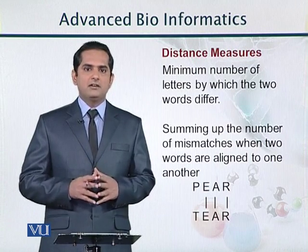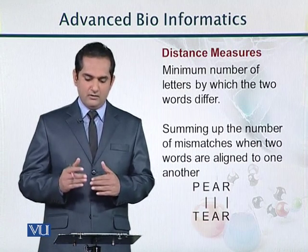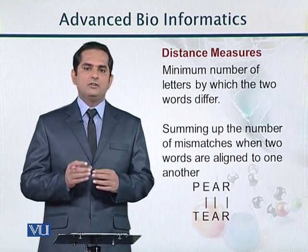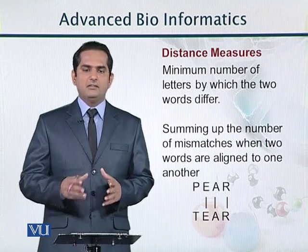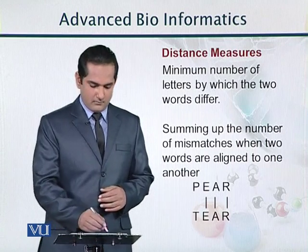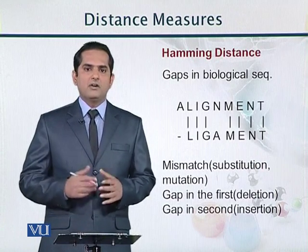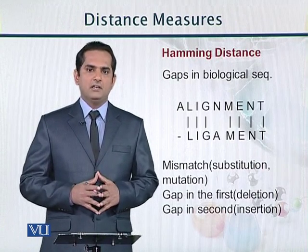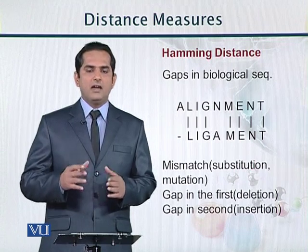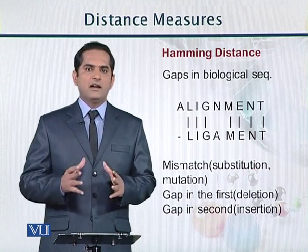Summing the number of mismatches when two words need to be aligned gives the total Hamming distance. In this case there is only one character difference. In biological sequences, if two sequences have similar length, that is okay.